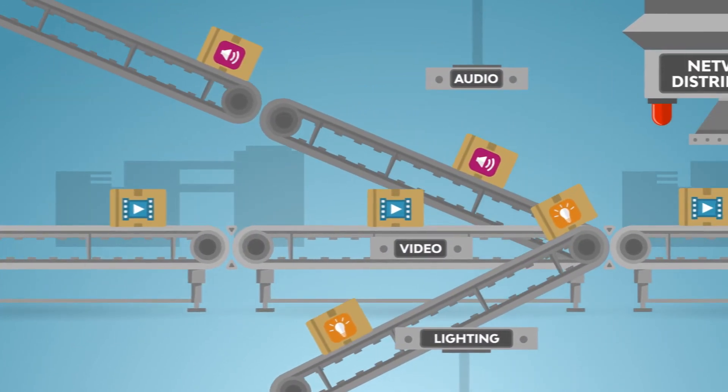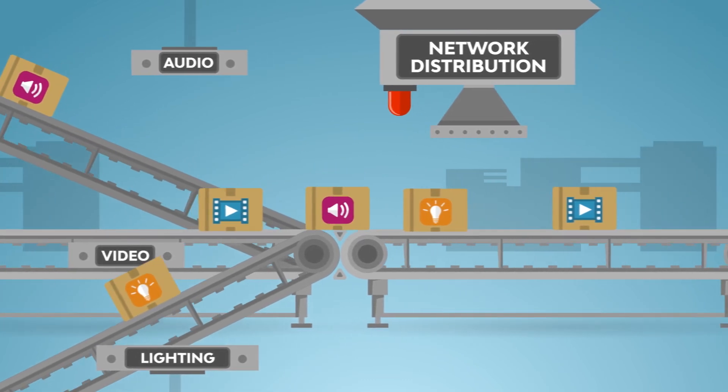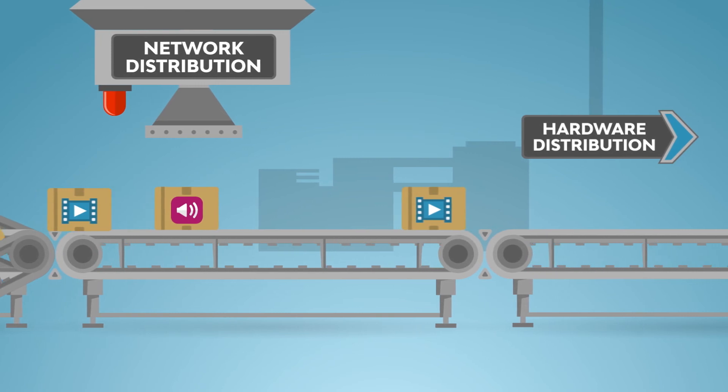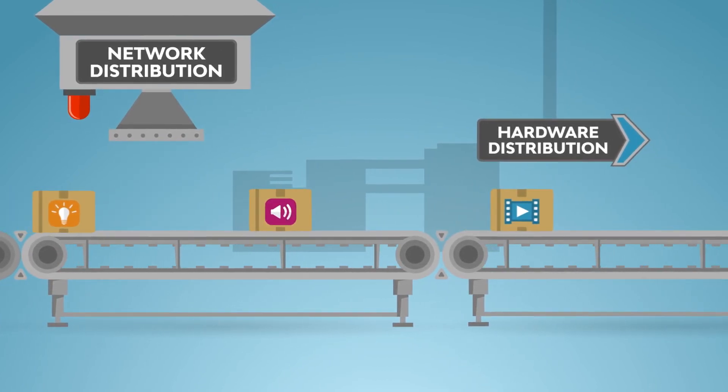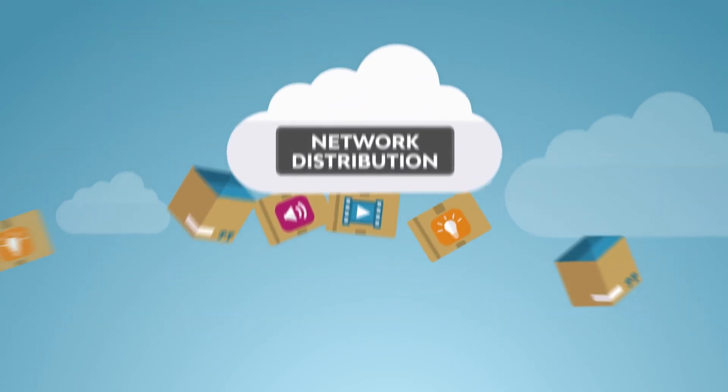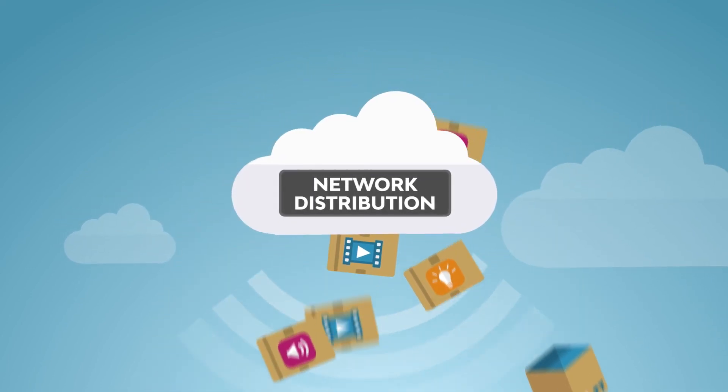For audio, video, and lighting signals to reach their final output destinations, they need to be distributed. AVL distribution sends the signals wherever they need to go. Historically, these have used dedicated specially designed hardware with proprietary architecture. But today, they are increasingly deployed over the network, which allows for infinite scalability across a facility, campus, or the world.